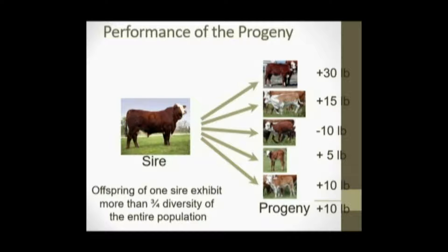So as an example, if the breed average for weaning weight was zero for this particular breed, then you could say that this sire who has a plus 10 EPD — on average his offspring would be 10 pounds heavier at weaning compared to the average offspring of the average bull from this breed. The other important note is that offspring of one sire exhibit more than three-quarters of the diversity of the entire population. Another way of saying that is knowing the sire accounts for only one-quarter of the additive genetic variation.